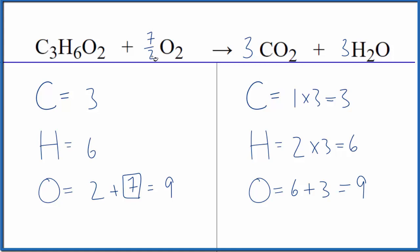So seven over two times two is really just seven. So we end up with two plus seven, that gives us nine. And this equation, it's balanced.